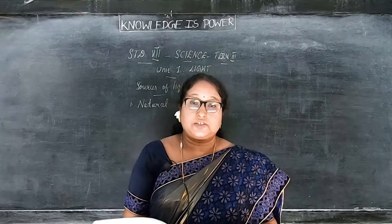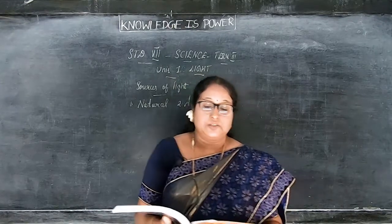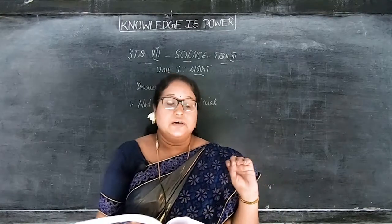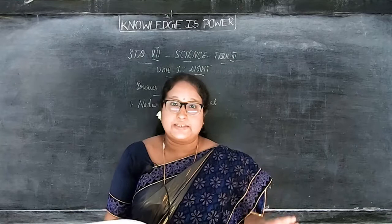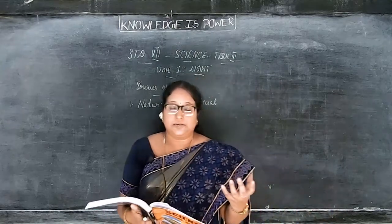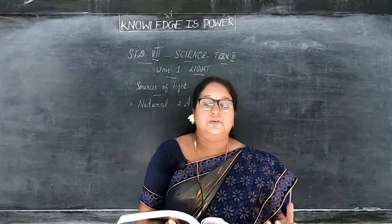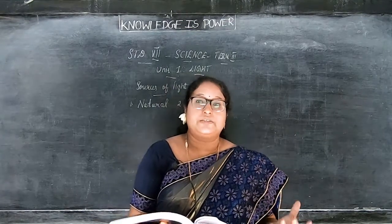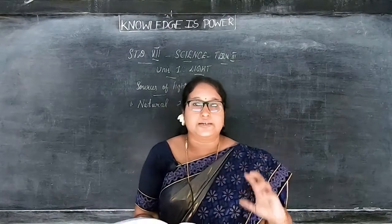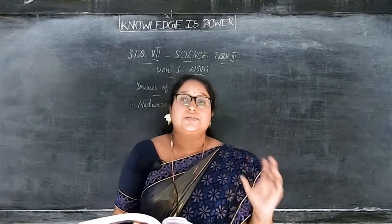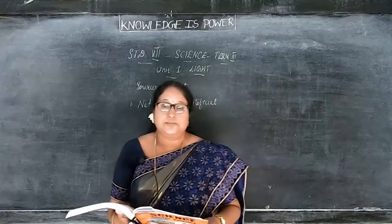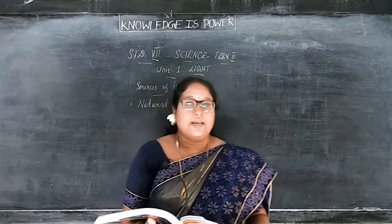Sources which emit light naturally are known as natural sources of light. Emit means that gives light. So sources which give or emit light naturally are called natural sources of light. The sun is the primary and the major source of natural light. In the morning and all, we get light from the sun. Sun is the primary and major source of light.